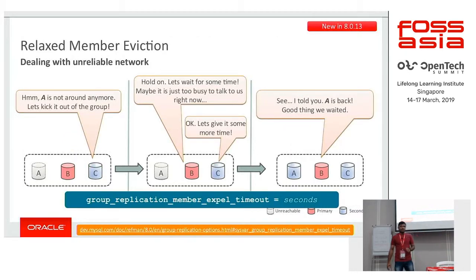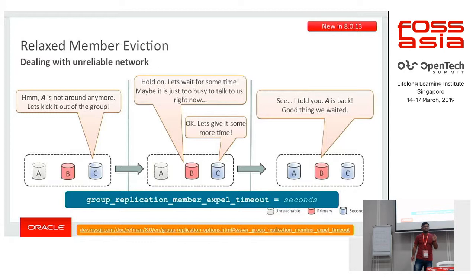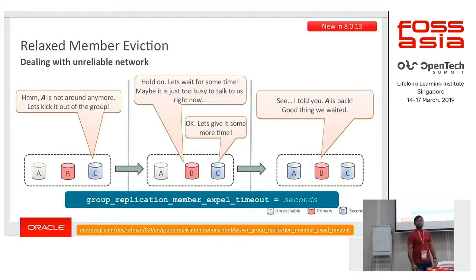Relaxed member eviction. Network partitioning and network glitches are very common in the real world. Assume I have this group and due to a glitch, a member goes out. Network partitioning can be a longer outage or a small momentary one. In cases where I know certain situations are very common, I can set member_expel_timeout — for example, 5 seconds. The group will wait 5 seconds before evicting the member, and if it rejoins within that duration it will remain part of the group. I do not have to take the extra effort of bringing it back manually.